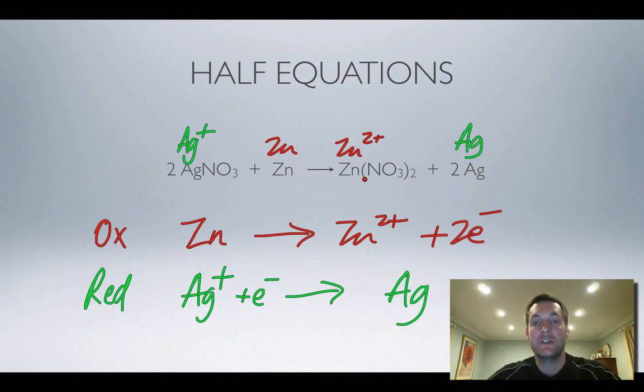But the half equations, or what half equations are, they're a way of representing the oxidation and the reduction processes as two entirely separate processes, which is kind of a nice easy way of visualizing these things. But just bear in mind that in a redox reaction, you can't have one without the other. So any redox equation can be split into half equations.